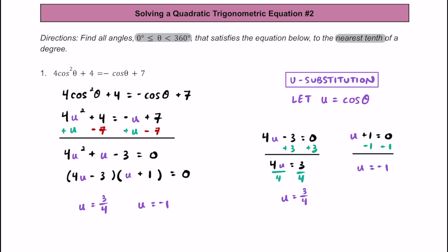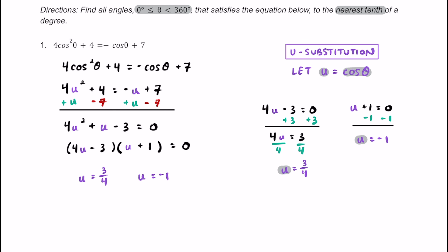At this point, you also want to remember what u represents. Remember each of these u's represents cosine of theta. So let's make that substitution back. We can say that cosine of theta is equal to three fourths, as well as cosine of theta is equal to negative one.